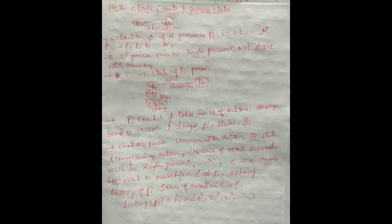The notation →i (arrow i) represents: event e occurs before event e-dash at process pi. Whenever one event occurs first and a second event occurs after, that is the sequencing of events — we call this the ordering of events. Events may be dependent on one another or independent, but the ordering is maintained.